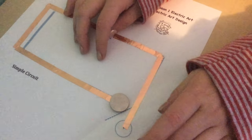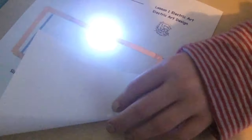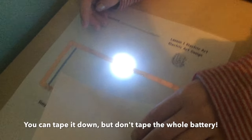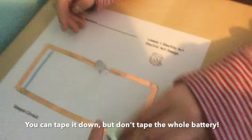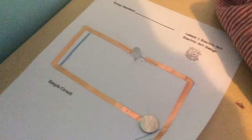And then the plus side, you fold it over. So the plus side right here meets the plus side on the battery. And then you fold it down and it lights up. And the thing about this, you can tape it down, but don't tape the whole battery. You just tape the sides or you can just put a little clip. But you don't need to.